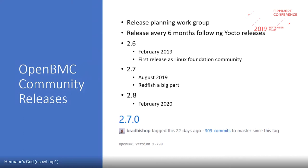Version 2.8 is scheduled for February 2020. The releases follow Yocto releases — two a year — and lag the Yocto release by about a month or two. This is a screenshot of the 2.7.0 tag from last month.